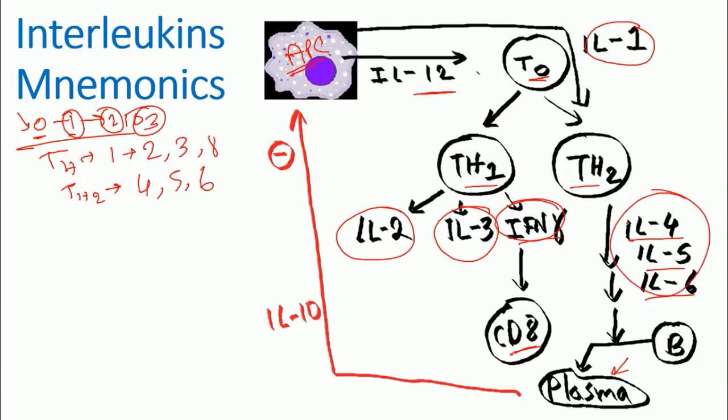Now once plasma cells are active, plasma cells will also produce another interleukin, known as interleukin-10. And interleukin-10 is going to repress the act of antigen-presenting cells. It's going to inhibit the activity of antigen-presenting cells to release or prevent the release of interleukin-12 further. So it's a negative feedback loop that we can see.